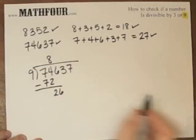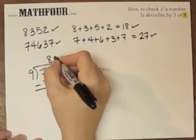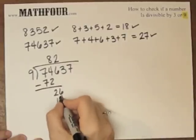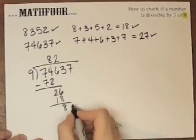9 goes into 26. 6, 3 is 27, so this is probably 2. So that's 18, and 26, that's 8. Bring down the 3.